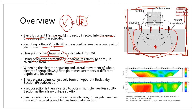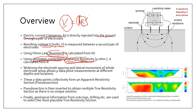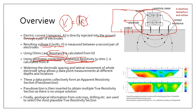If you are interested in making a 2D resistivity section, what we typically do is move the whole setup around. You can move the electrode array sideways — left or right — and that will produce another data point. You can repeat this until you obtain a lot of data points.